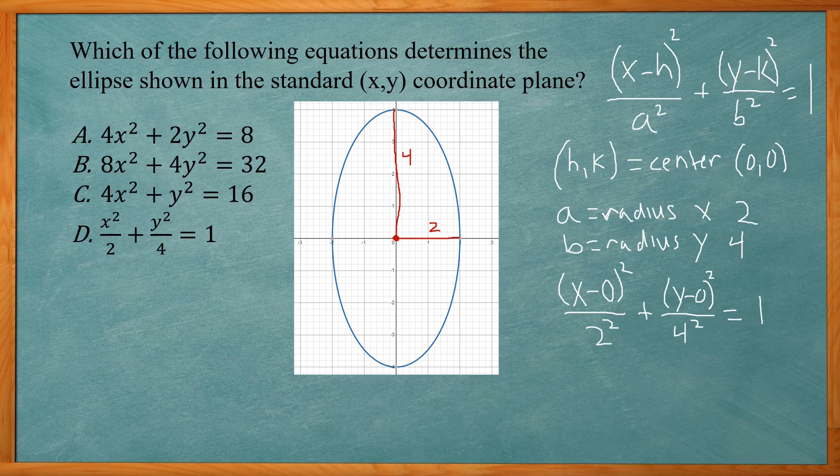Now I can simplify. x minus 0 is just x, so x squared. 2 squared is 4. And with the y, you just have y² over 16 is equal to 1.